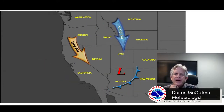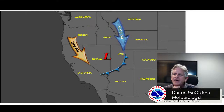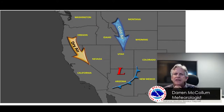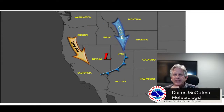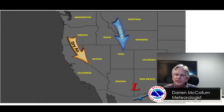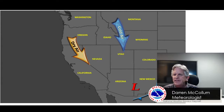Another typical pattern is what we like to call the inside slider, because it mostly moves inland and the flow is mostly dry and overland. The low moves in from Washington and Oregon across Nevada and swings across Arizona. A fast moving cold front usually produces some precipitation and snow, but it's usually short-lived and doesn't amount to too much.